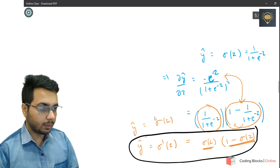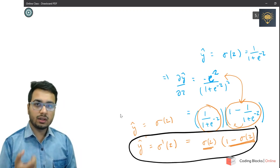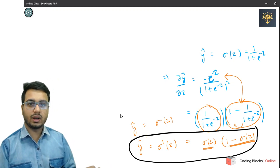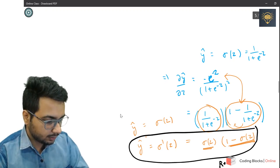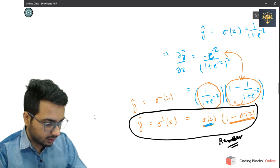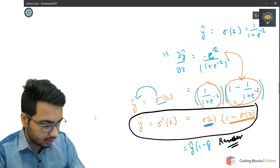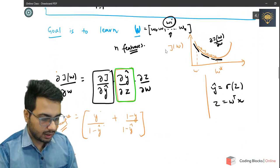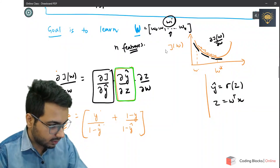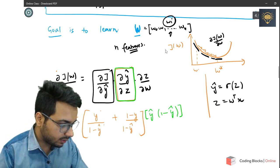So this term is nothing but σ(z), and this other term is 1 - σ(z). Therefore, the derivative of y_hat with respect to z is σ(z) · (1 - σ(z)). This is a very important result — the derivative of the sigmoid function is σ(z) · (1 - σ(z)) — and it will be very useful when working with multilayer perceptrons as well. Since σ(z) = y_hat, we can write this as y_hat · (1 - y_hat).